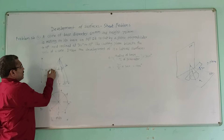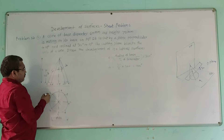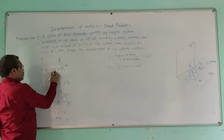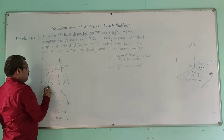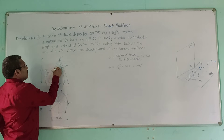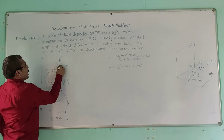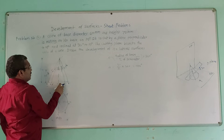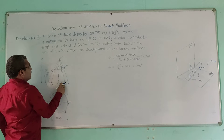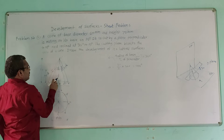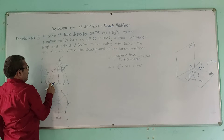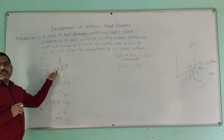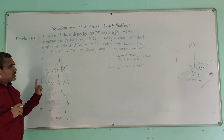Name the intersection points of the cutting plane with the 8 generators as 1', 2', 3', 4', 5', 6', 7', and 8' — corresponding to generators A, B, C, D, E, F, G, and H respectively. You now have all 8 intersection points of the cutting plane with the 8 generators marked.